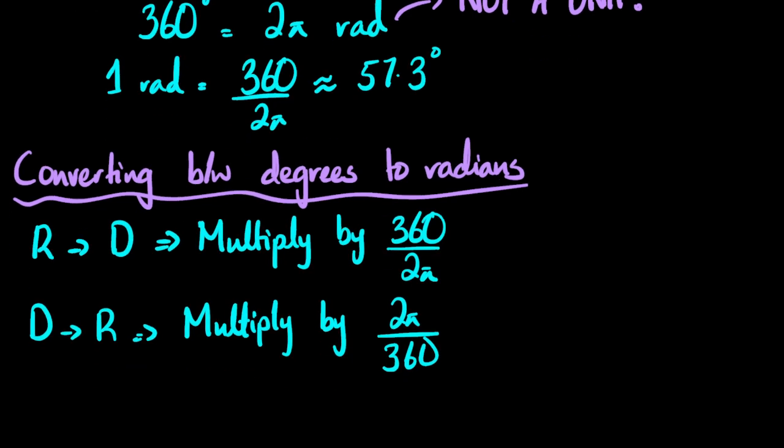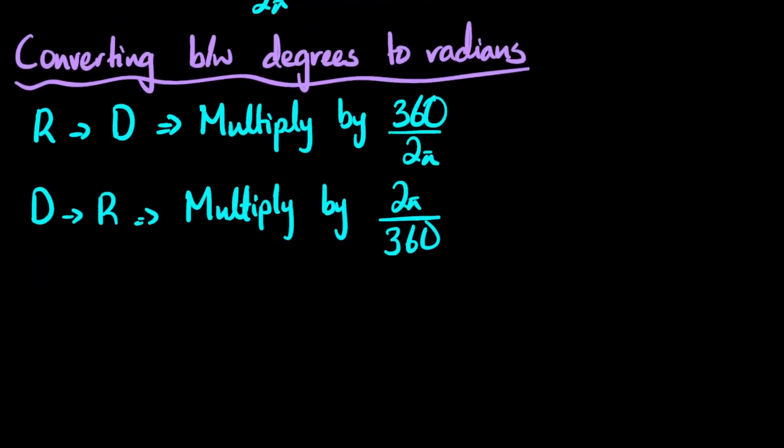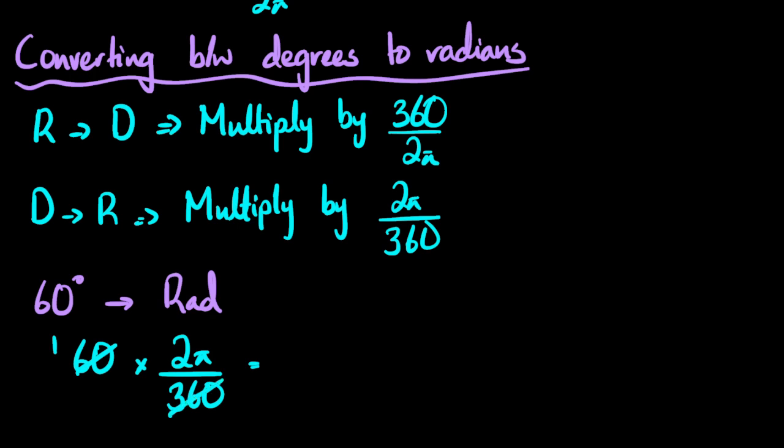So now if we quickly assess ourselves: 60 degrees to radians, how do we go about doing this? So degrees to radians, right. 60 is what I have to convert. I'm going to radians, so I keep 2π on the top and divide by 360. So 60 times 2π upon 360: 6 times 60 are 360, so 2π upon 6, this becomes π by 3 radians.